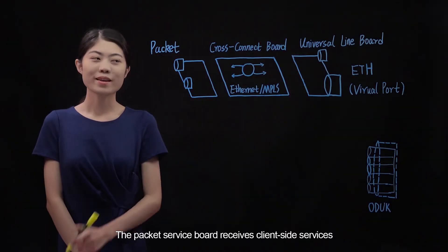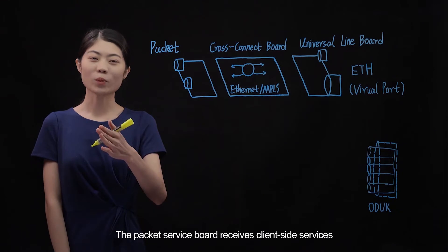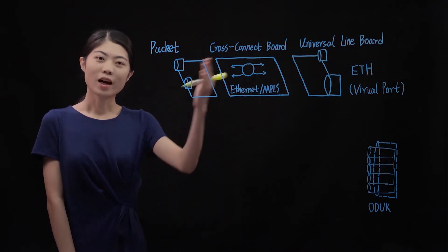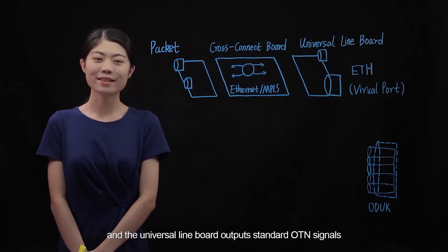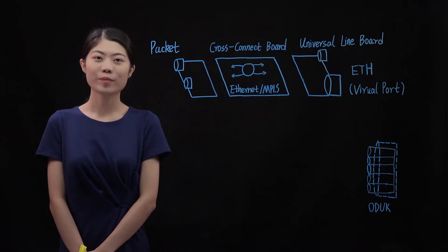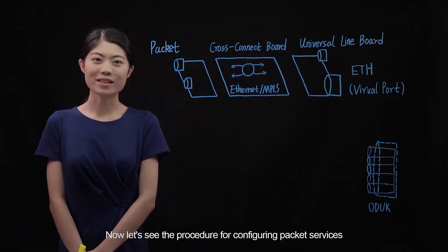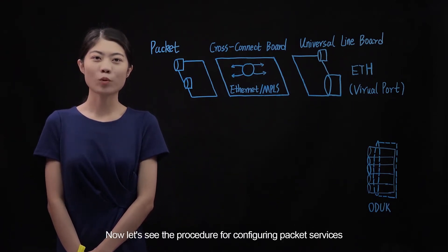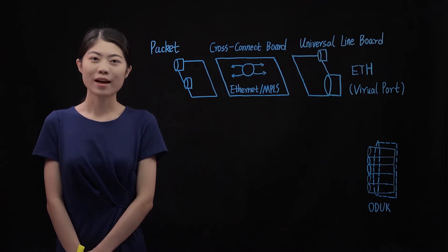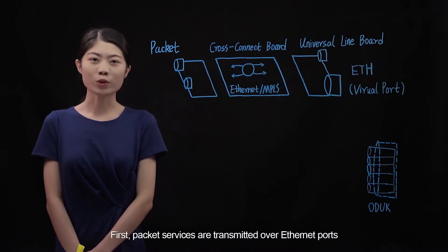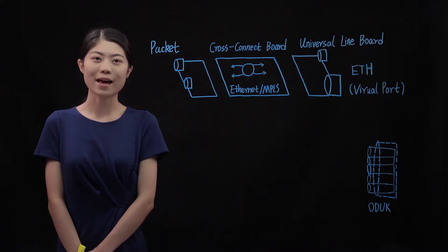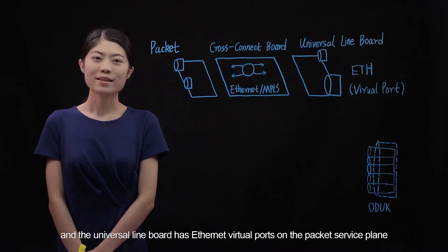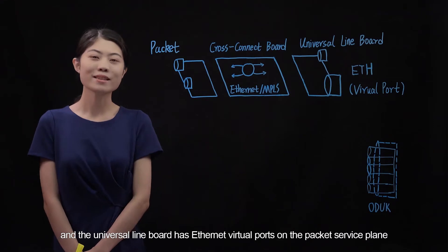The packet service board receives client-side services, and the universal line board outputs standard OTN signals. Now let's see the procedure for configuring packet services. First, packet services are transmitted over Ethernet ports, and the universal line board has Ethernet virtual ports on the packet service plane.